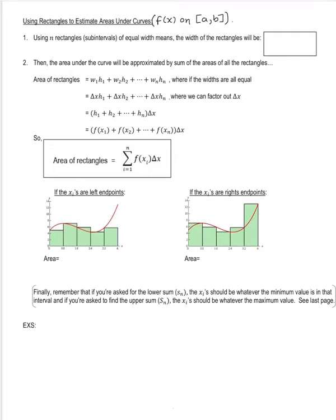Initially, we're always going to default to using rectangles of equal width, and that width is going to be denoted with delta x. So delta x is our width. We're going to take the width of the whole interval — for example, going from zero to four, or in general from any a to any b. So we're going from some interval from a to b.